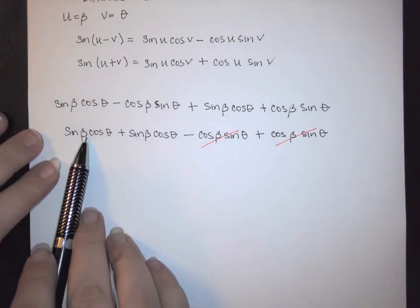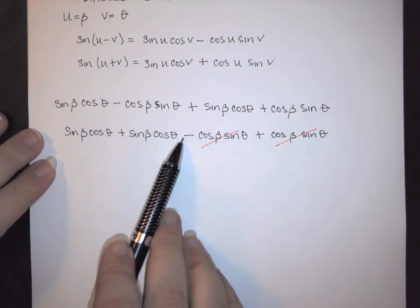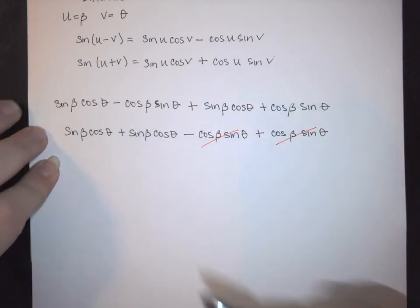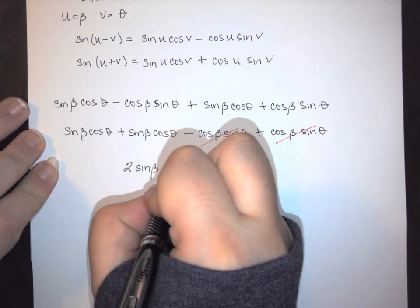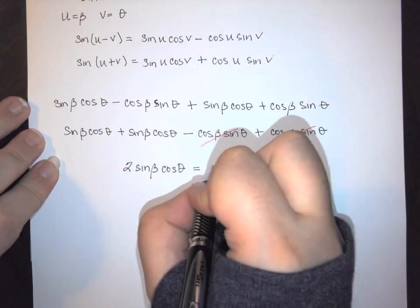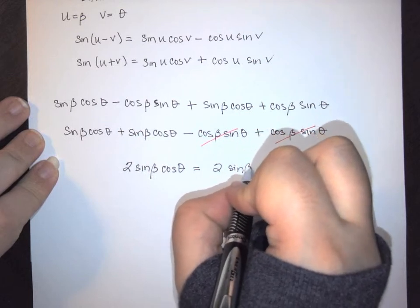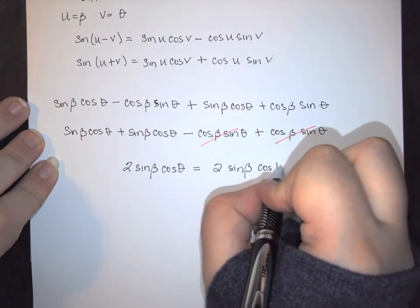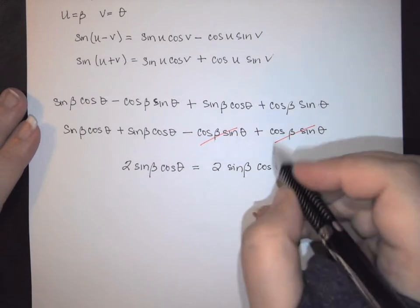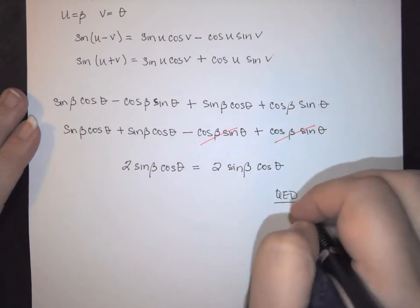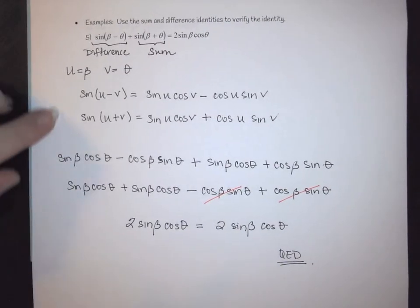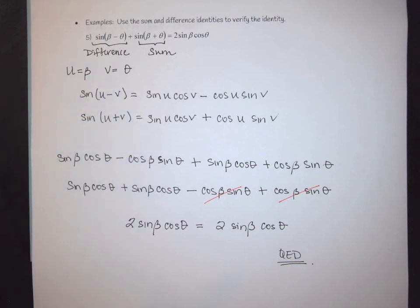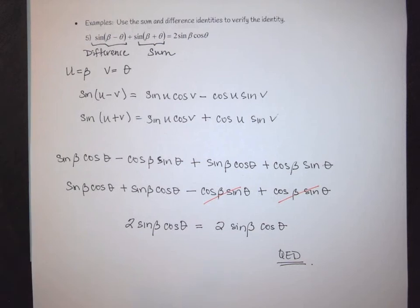After cancellation, I have sine(beta)cos(theta) plus sine(beta)cos(theta), which gives two sine(beta)cos(theta). This equals exactly what I wanted: two sine beta cosine theta. Therefore, I have proven this identity, showing through the use of the sine identity that the left-hand side truly does equal the right-hand side.